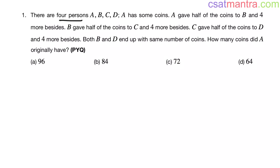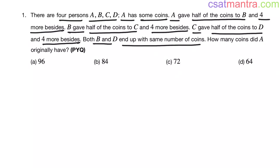There are four persons A, B, C, D. A has some coins. A gave half of the coins to B and four more besides. B gave half of the coins to C and four more besides. C gave half of the coins to D and four more besides. Both B and D end up with same number of coins. How many coins did A originally have?